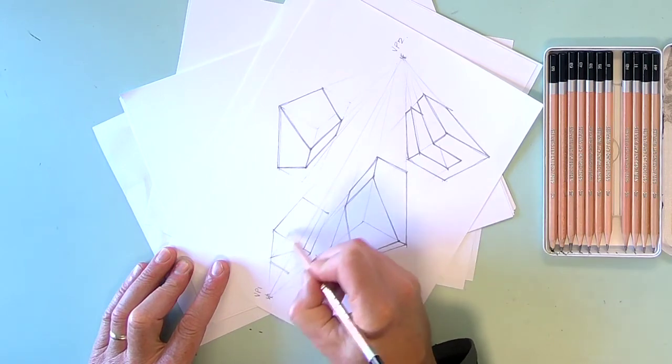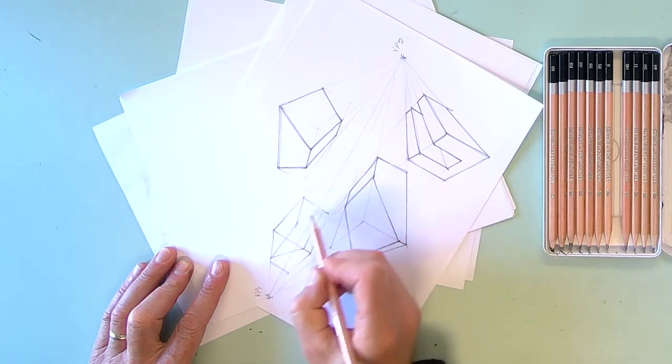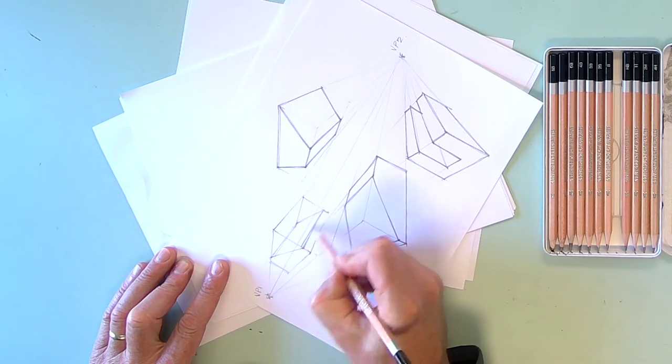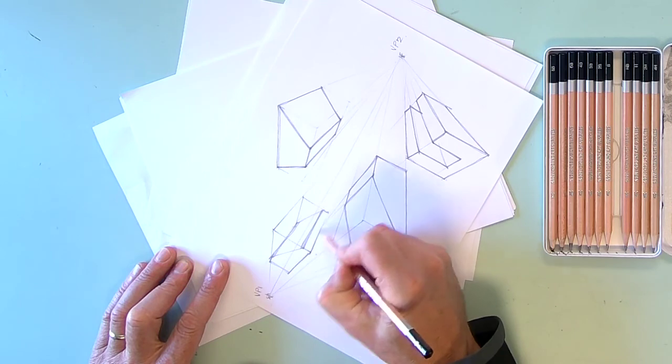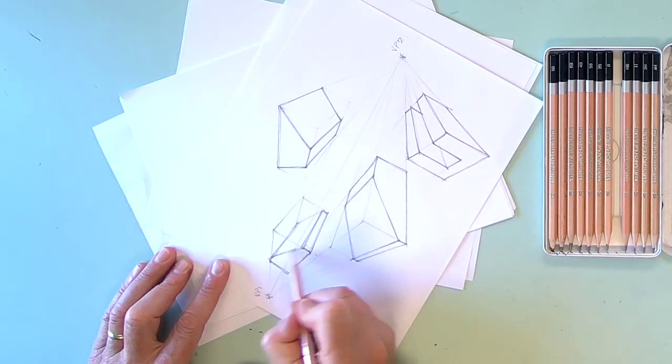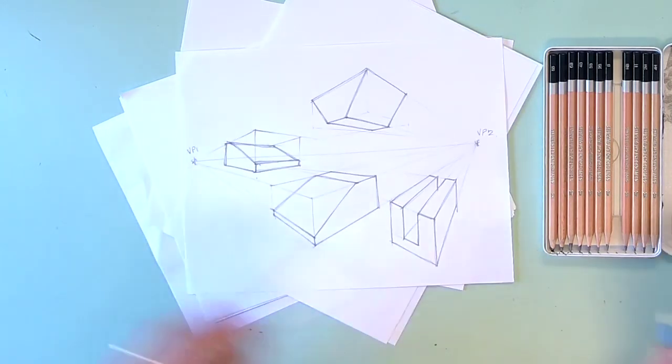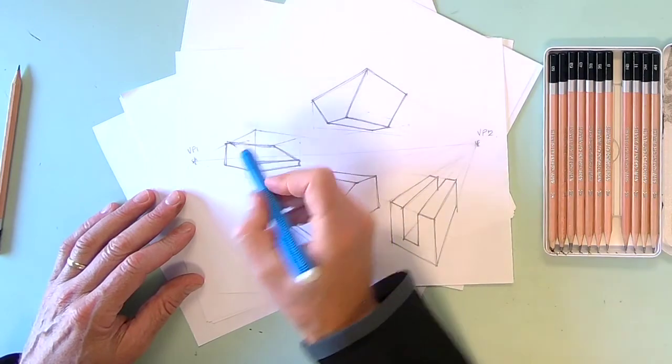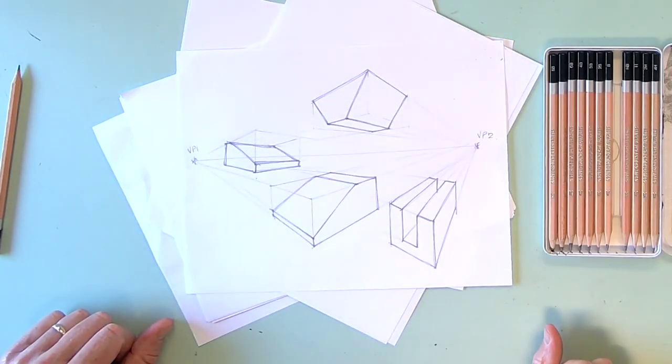VP2, VP1. And where that one intersects, that is where my box is here. Okay. Do you see that? So on this one, I'm not seeing underneath it and I can't see the top of that face, but you can still draw over the horizon line.